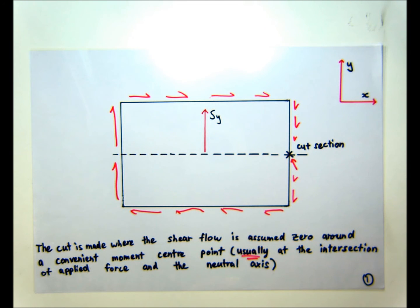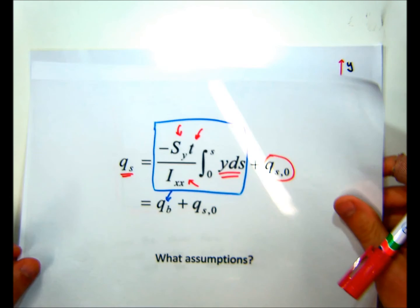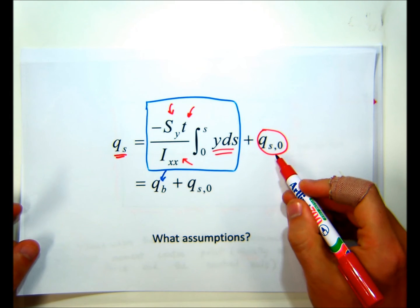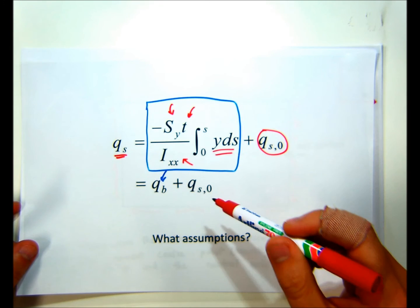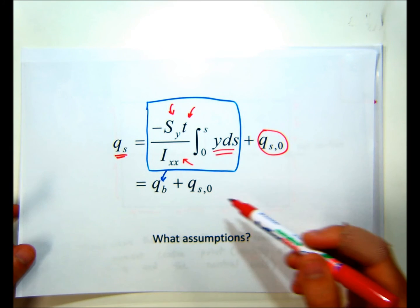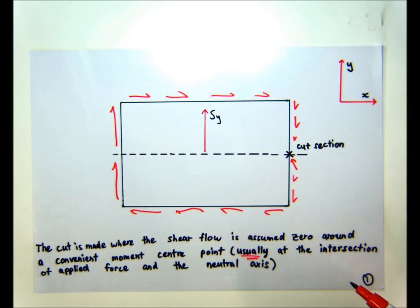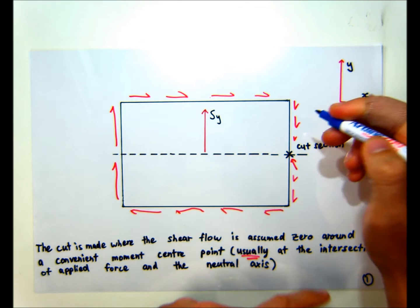So if we go back to a previous slide, our QS0 here will modify the Q in every panel by that value. So that'll be constant around the section. So that will look something like this.